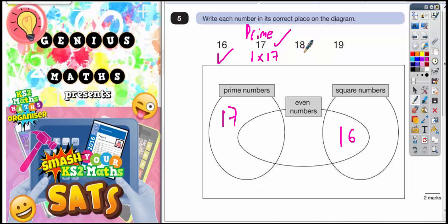18, well, 18 has got 1 times 18, 3 times 6, and 2 times 9. So it's certainly not prime. So it can't go in this circle. And it's not a square number either because the next square number after the 4 by 4, 16, would then be the 5 by 5, which would be 25. So 18 isn't a square number either.